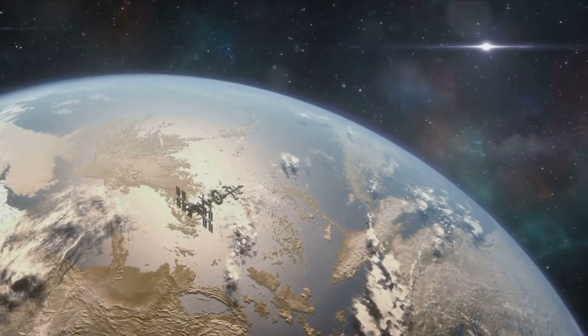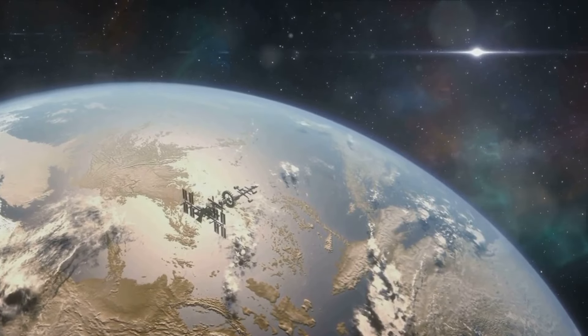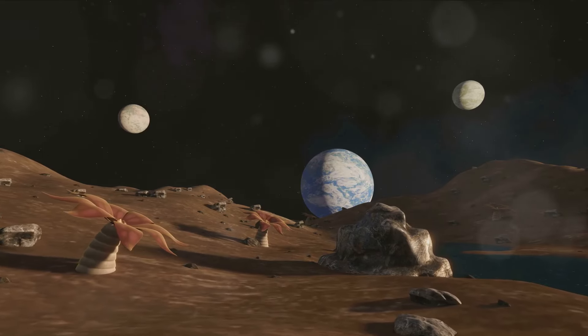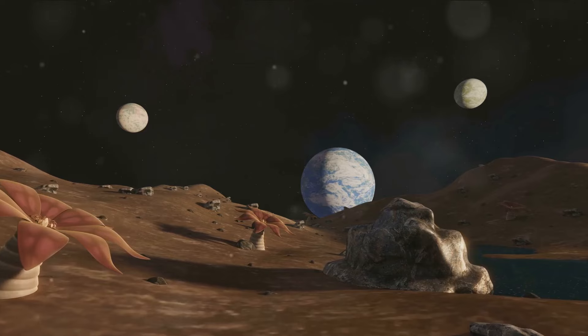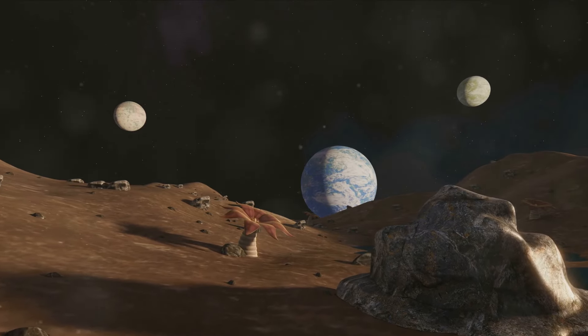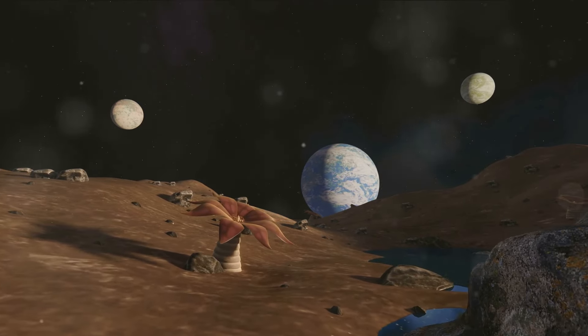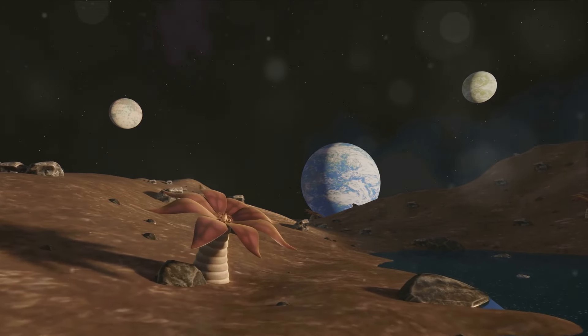Finally, we venture to TRAPPIST-1g. This is the largest planet in the system and receives about the same amount of light as the asteroid belt in our solar system. It's a bit of a conundrum, hiding its secrets beneath its surface. But that's the beauty of the universe, isn't it? The unknown waiting to be discovered, the mysteries waiting to be unveiled.